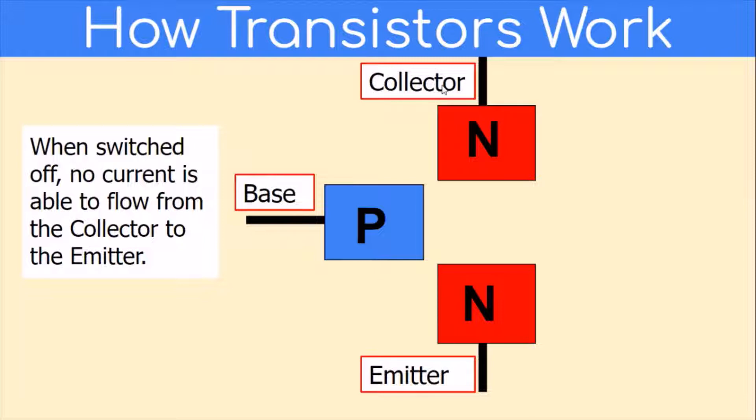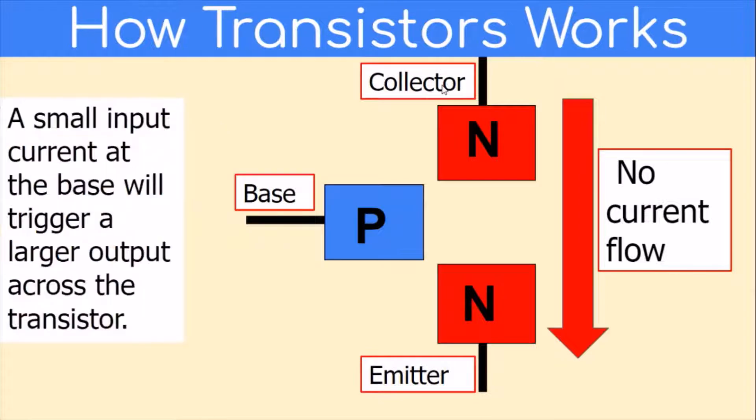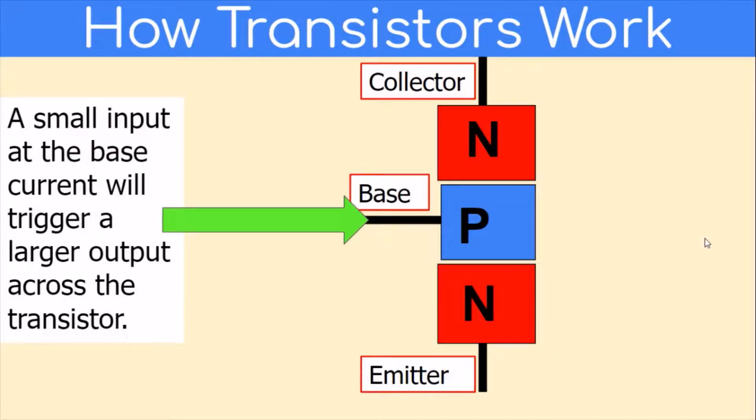When the transistor is switched off, no current is able to flow from the collector to the emitter. However, a small input current at the base will trigger a larger output across the transistor. By adding a small current here to the base, we can now have current flow.